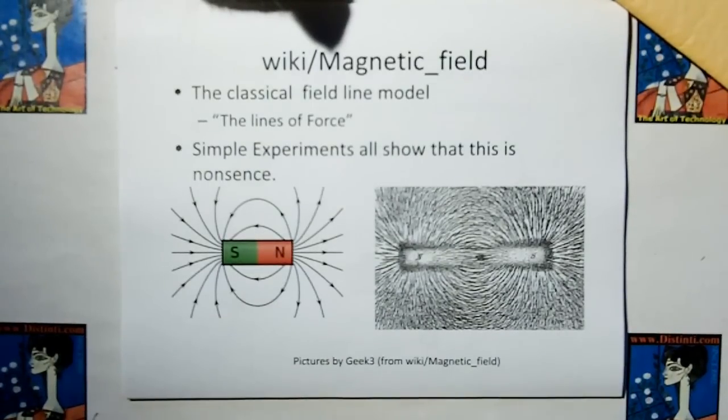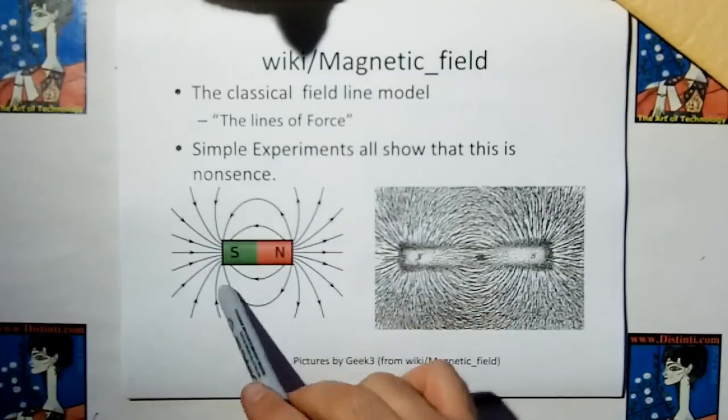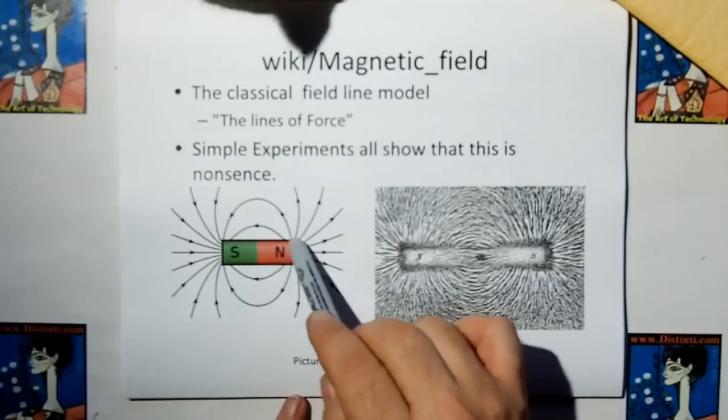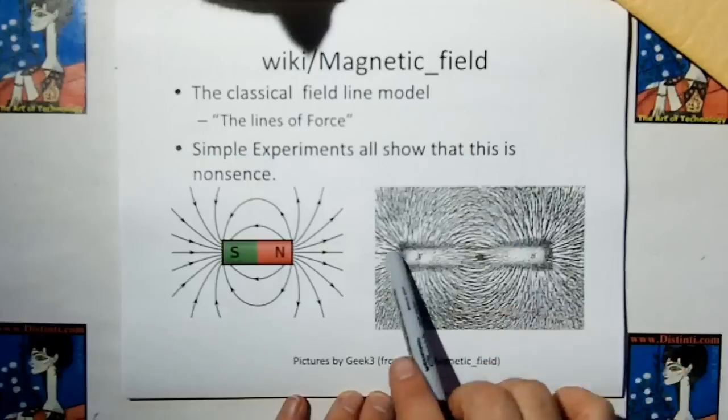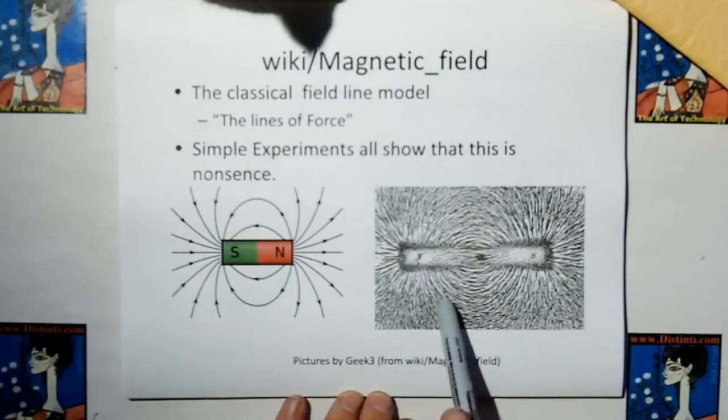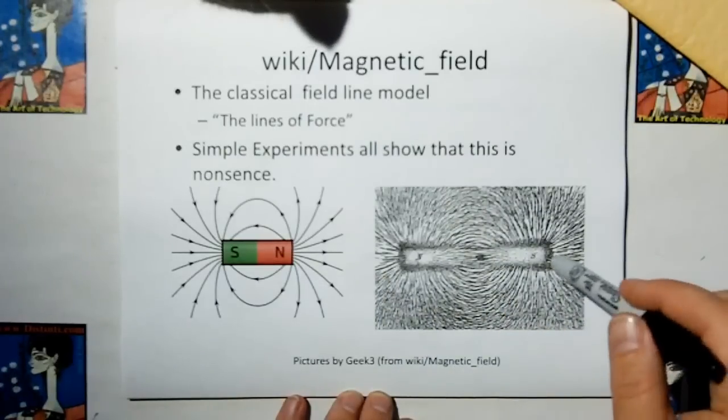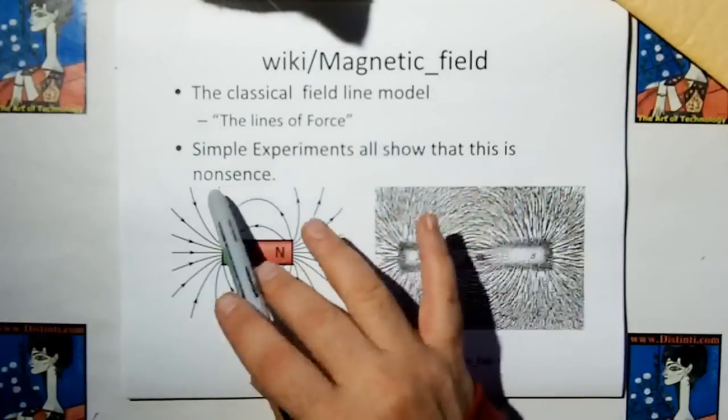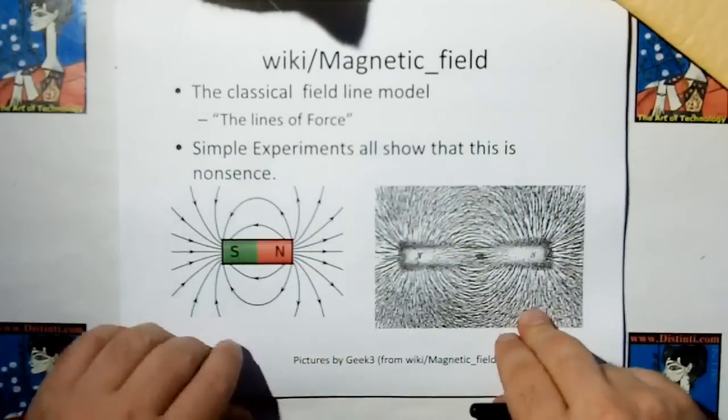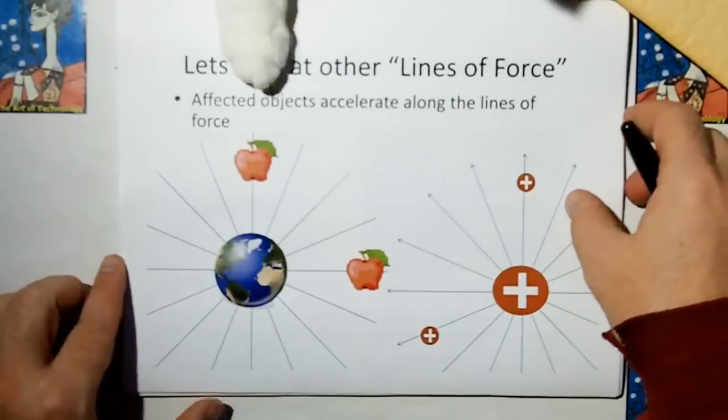If you go to a wiki magnetic field, you can see the classic model for the classic flux line model about a magnet. They have a north side, a south side, and it looks like a charge. They get this from the fact that they dump iron filings over a magnet with a piece of paper in between, and this is the formation that the iron filings take, and therefore they assume that that's the magnetic field. I'm going to show with some simple experiments that this is complete nonsense.